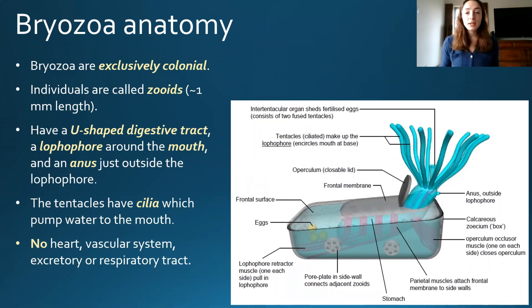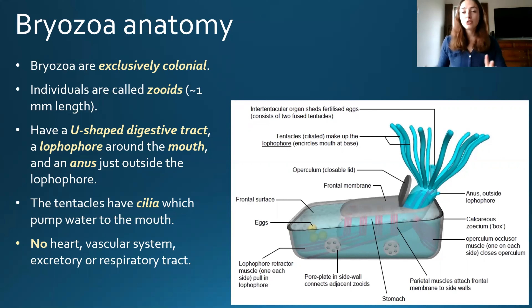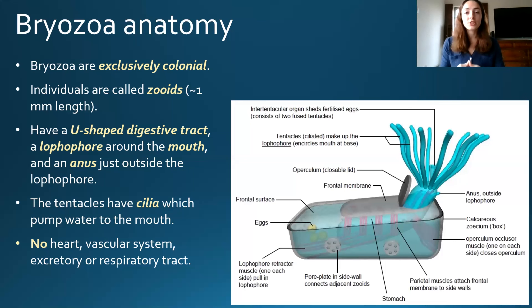Now let's go over the anatomy and body structure of bryozoans. Bryozoans are colonial, so the picture here shows one of the individuals that lives in those colonies — these individuals are called zooids. There can be tens of millions of zooids in some colonies. Zooids have a U-shaped digestive tract and a lophophore, which is what classifies them in the lophophorate group. The lophophore has ciliated tentacles that draw water toward the mouth, allowing the animal to filter feed.